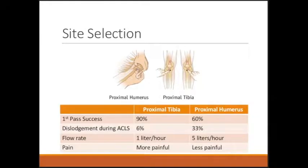The two most common sites for IO catheter placement are the proximal humerus and proximal tibia, and there are trade-offs between the two. The proximal tibia is much easier to palpate, so the success rate is higher, and in a code situation nobody is really using the knee, so the catheter doesn't fall out as much. The proximal humerus, on the other hand, is a much deeper bone under the deltoid — it's harder to feel, so you're more likely to miss. During a code with chest compressions and airway management, there's congestion around the head of the bed, so it can be dislodged more easily.